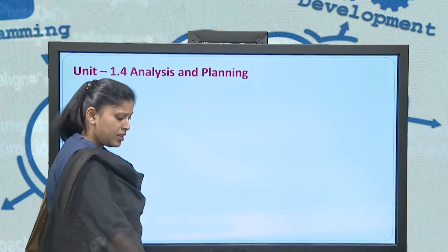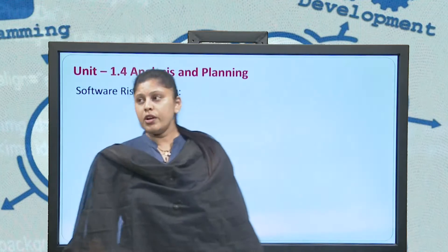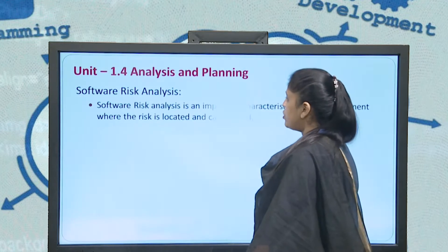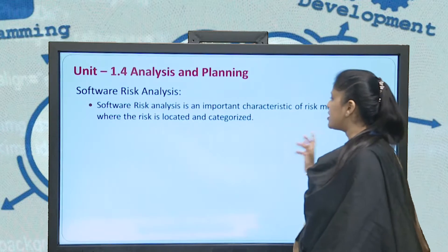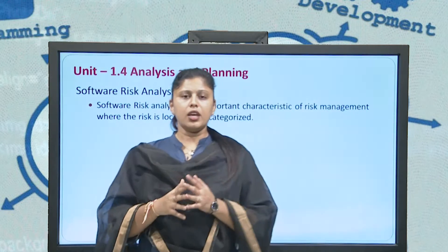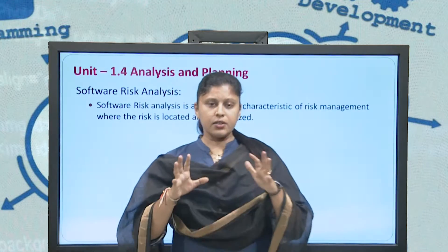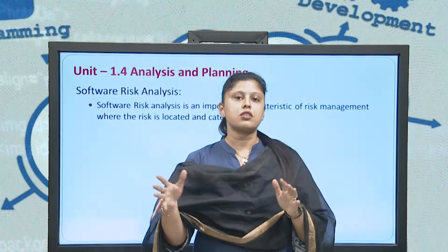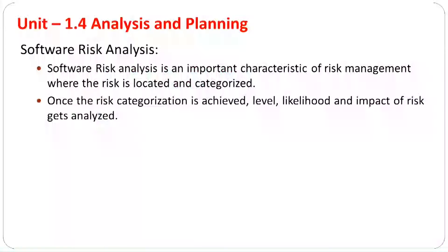Next, let us see what analysis and planning are. For software risk analysis, it is a very important characteristic of risk management where the risk is located and categorized. First, we locate the risk and characterize what kind of risk it is. Once risk categorization is achieved, the level, likelihood, and impact of the risk get analyzed.